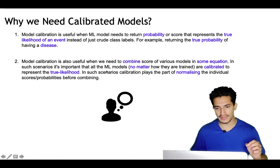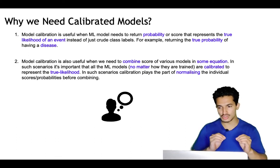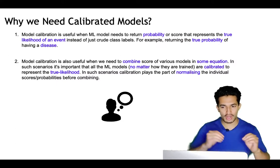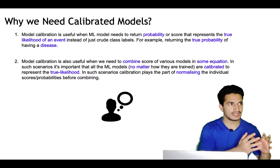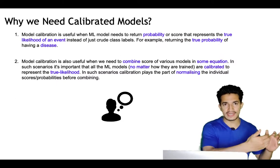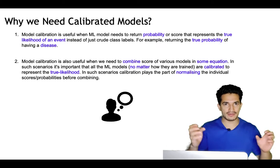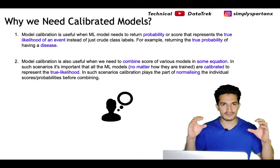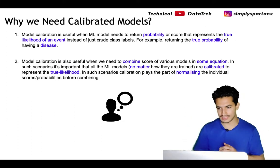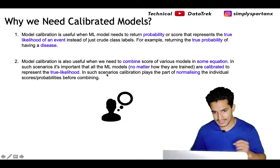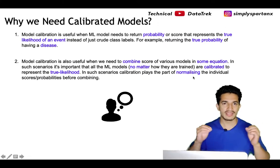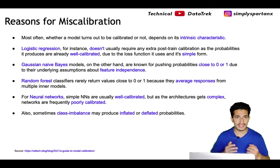Model calibration is also useful when we need to combine scores of various models in some equation. In such scenarios it's important that all ML models, no matter what algorithm was used, are calibrated. Calibration plays the part of normalizing the individual scores and probabilities before combining them.